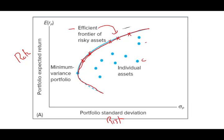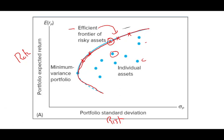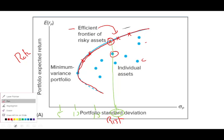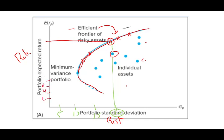Let me explain why. Let's take two points and compare them. These two assets both have a standard deviation of 20%, so the risk level is the same. But the one on the efficient frontier has a return of 22%, while the other has an 18% return. So if you have to choose between those two, you will always choose the one on the efficient frontier of risky assets.